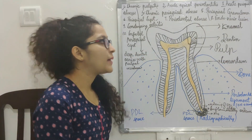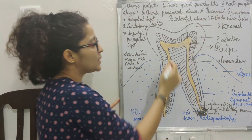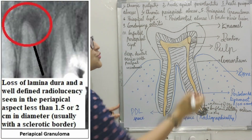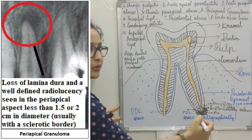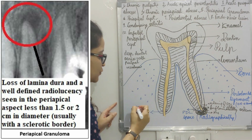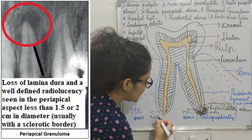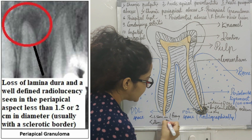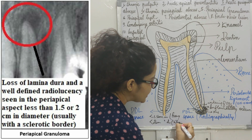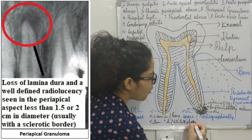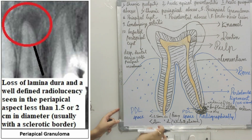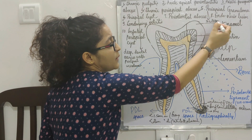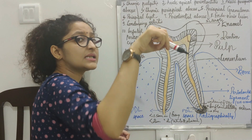Coming to periapical granuloma — you see widening of periodontal ligament space, loss of lamina dura, and a well-defined radiolucency in the periapical aspect which is less than 1.5 cm in diameter according to Freni, and less than 2 cm in diameter according to Vital Family. Periapical granuloma can also present with a sclerotic border — a well-defined radiolucency surrounded by a sclerotic border.